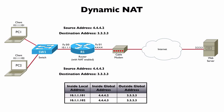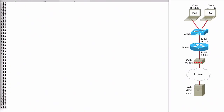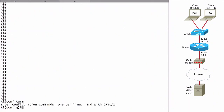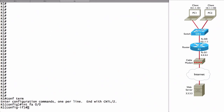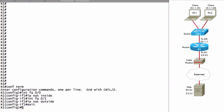Let's see how to set this up. We begin configuring dynamic NAT the same way we begin configuring static NAT — we specify which interfaces on R1 are inside and which are outside. Going into global configuration mode, from our topology we can see that Fast Ethernet 0/0 is on the inside of the network, so we say 'interface fast ethernet 0/0' and 'IP NAT inside'. Then we go into Fast Ethernet 0/1 and say 'IP NAT outside'.